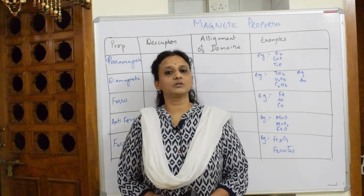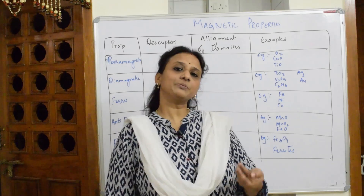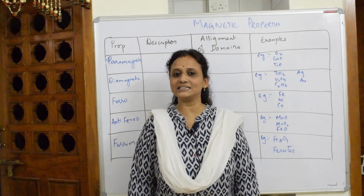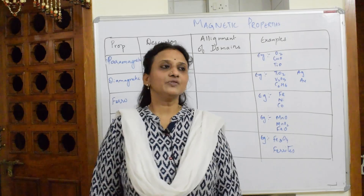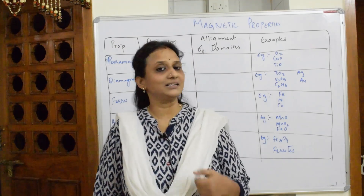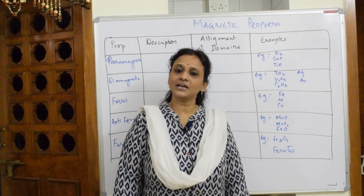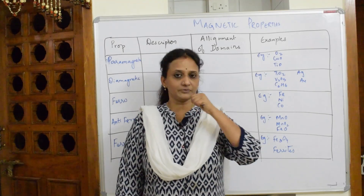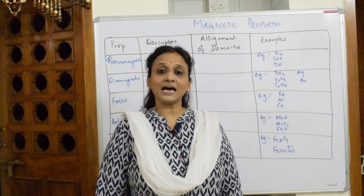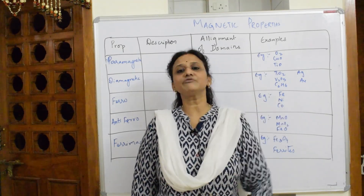We're now going to do the last topic of the chapter — magnetic property and electrical property. We are just going to give an introduction; we will study these in detail in your physics subject. When we speak about types of magnetic property, we know metals are highly conducting in nature. They emit electrons due to the photoelectric effect, and when I take a magnet and introduce these solids in the presence of a magnetic field, let us study.